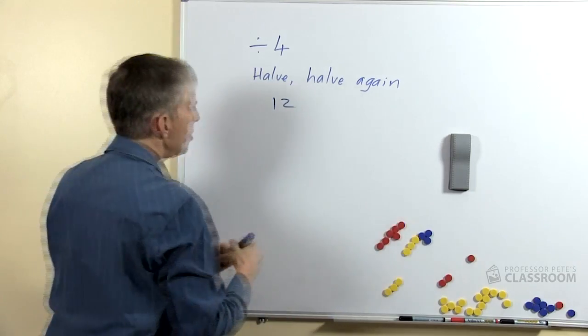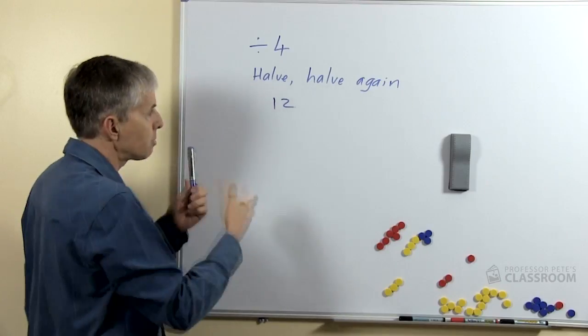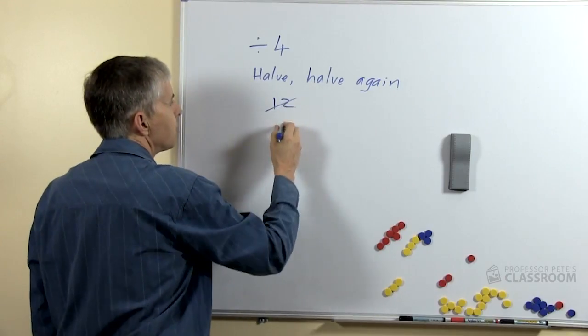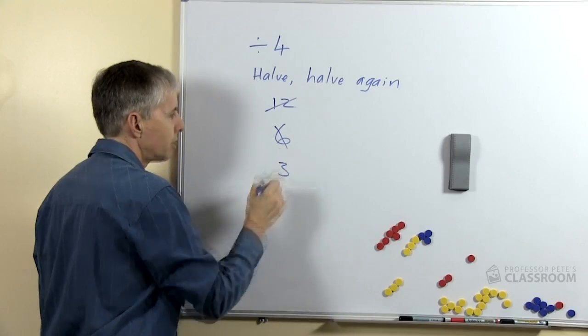Now you could quickly do questions like this with students by simply writing down: here's 12, what's half of 12 everyone? 6. What's half of 6? That's 3.